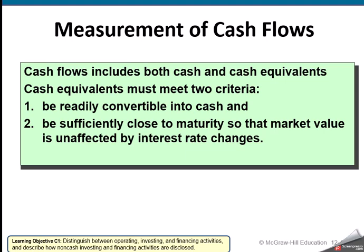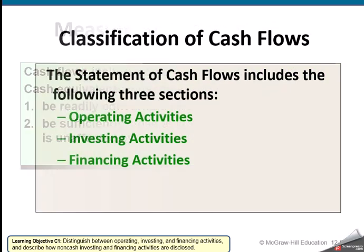We'll talk about cash and cash equivalents. Cash equivalents are things that are readily convertible into cash — they're very close to maturity and they're not going to be impacted by any changes in the market.